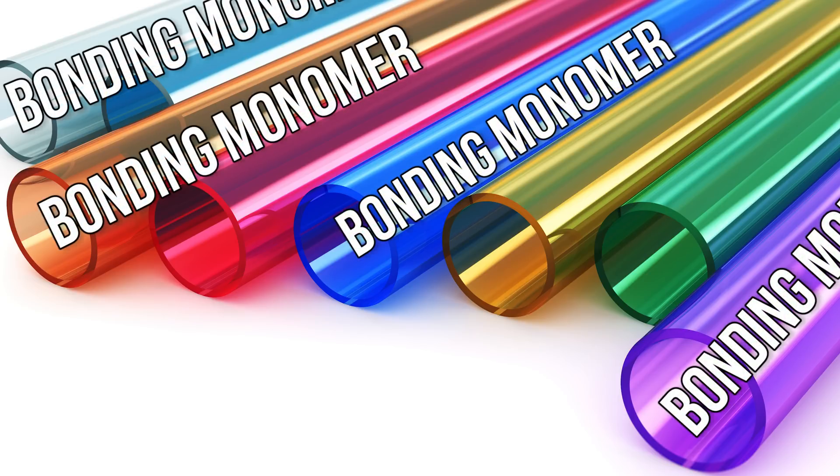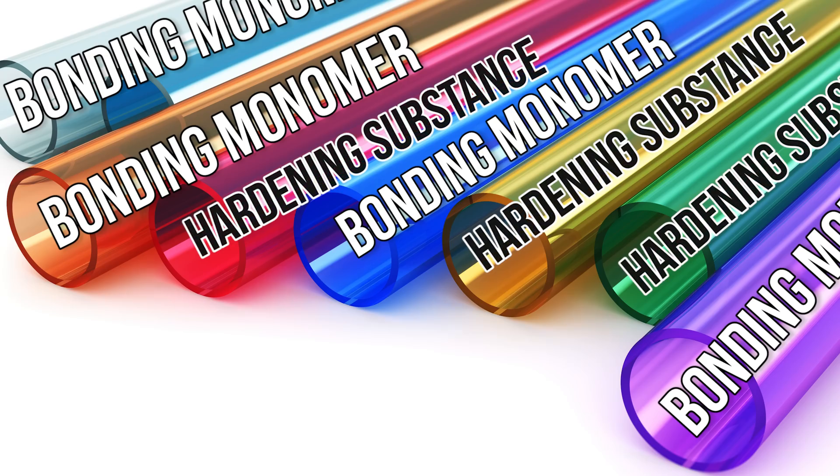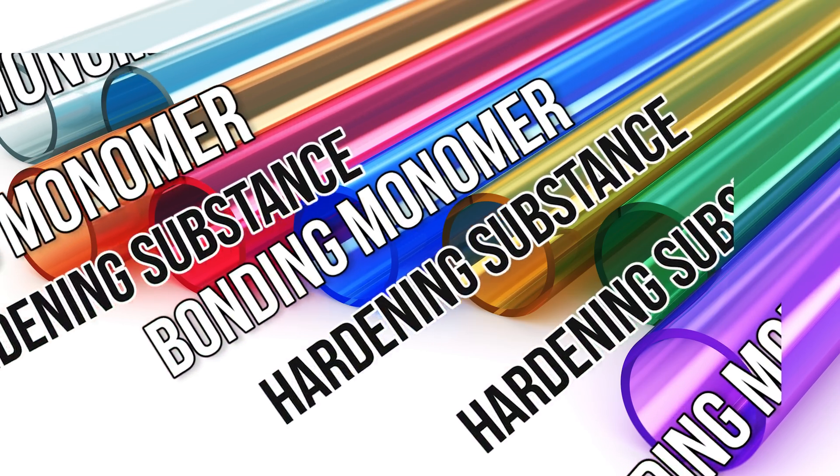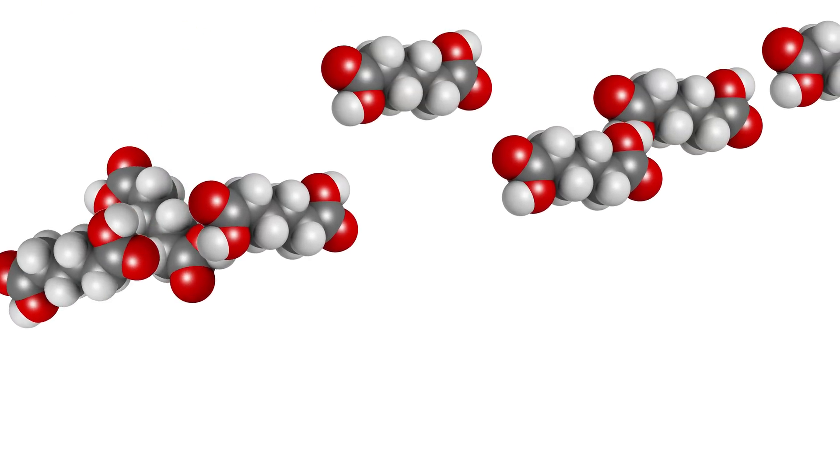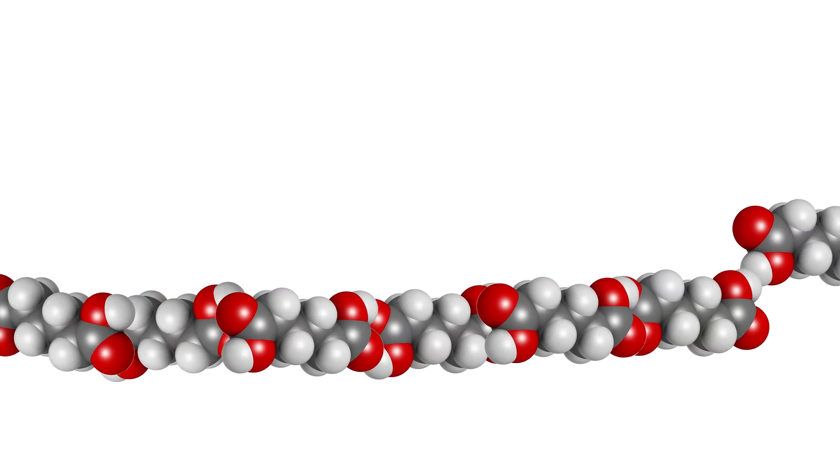Some of these microchannels are then filled with either a highly attractive bonding monomer or a slower working hardening substance, both of which are dispersed if the healing material receives damage such as a cut or break. This will cause them to mix together, first allowing the monomers to create a bond between the severed sections.